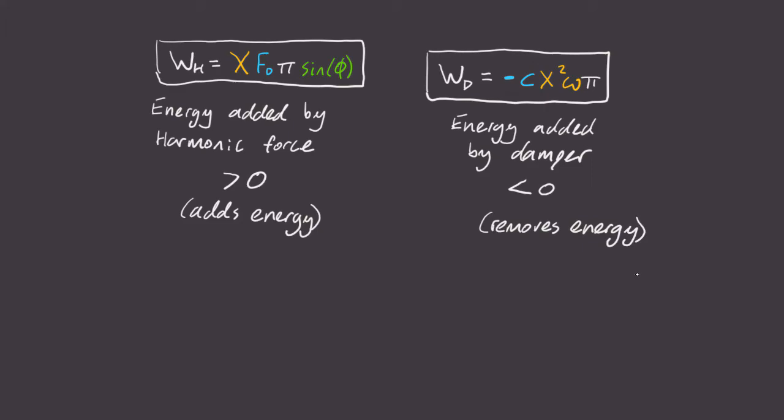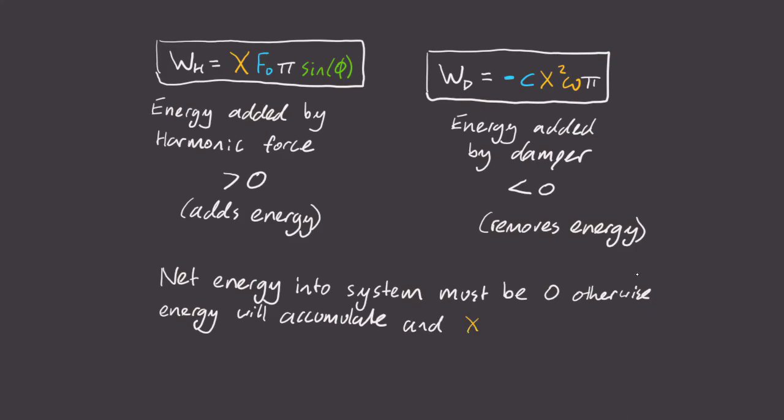These look like pretty separate results, but if you think about it, the net energy into the spring mass damper system must be zero. Otherwise, the energy would accumulate every single cycle, and the amplitude would get larger and larger and larger, approaching infinity. So that means that the net energy per cycle, WH plus WD, must equal zero.